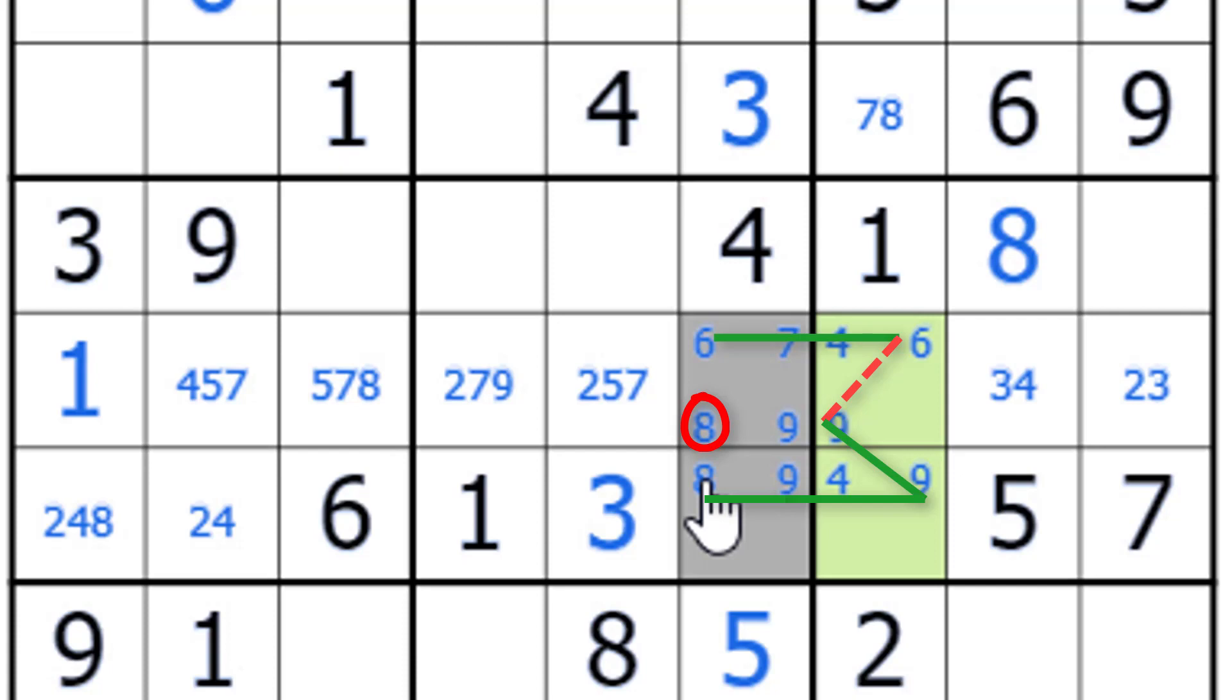Now let's test it out. We're going to start off here and we say, if that is not a six, and there's only two sixes in this row and it's a strong link, that means this one must be a six. If that's a six, then that is not a nine. If that is not a nine, then this is a nine because there are only two nines in that column.